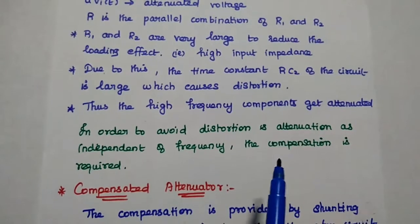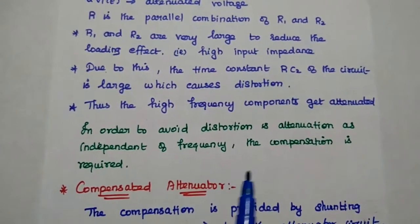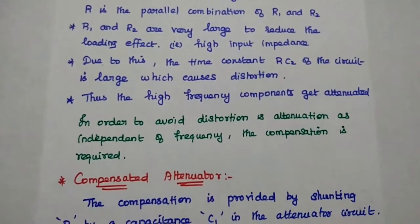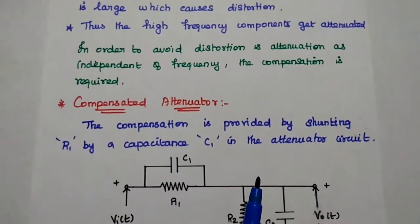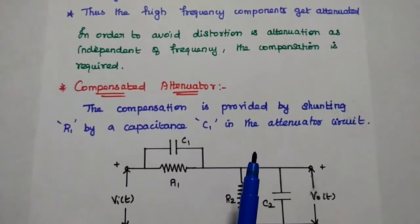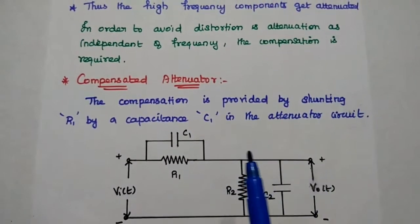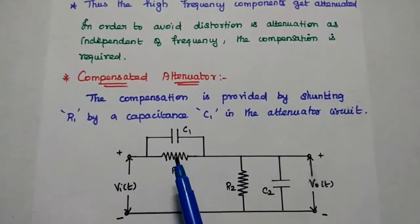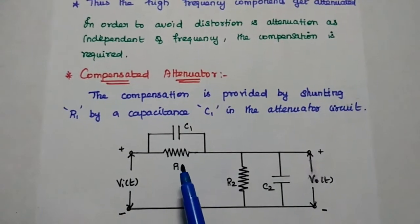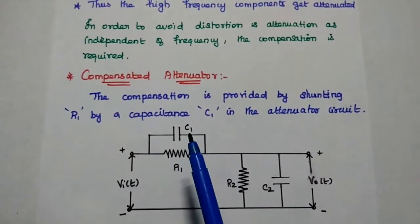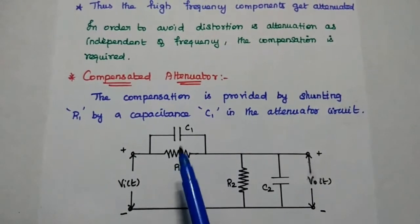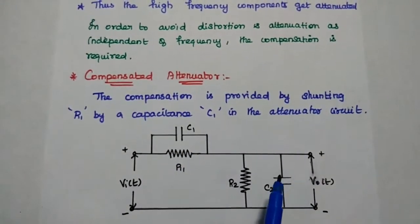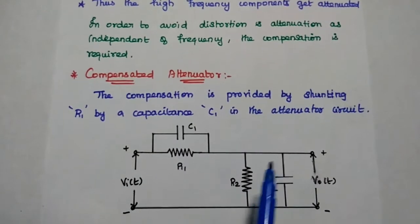We are going to compensate the effect of C2 by using compensation technique. Here we can consider a compensated attenuator. The compensation is provided by connecting a capacitance C1 in parallel with this R1. We have to introduce one more capacitance C1 across this R1 to compensate or neutralize the effect of this C2.